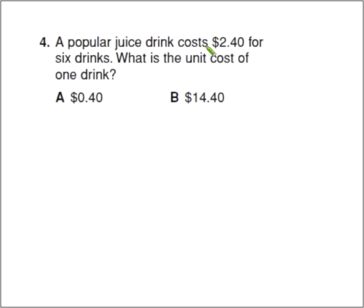So let's take a look at this one. A popular juice drink costs $2.40 for 6 drinks. We're still with the ratios now. What is the unit cost of 1 drink? How much is 1 drink? So we're going to work with our ratios again. So we have a ratio of $2.40 for every 6 drinks.